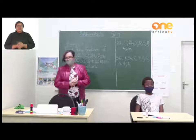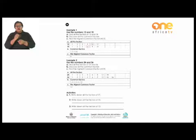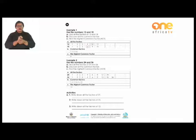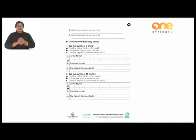We continue on page 14. After the examples you will find your activities. The first activity says: write down all the factors of 27. Number two: write down all the factors of 35. Number three: write down all the factors of 72. Number four: write down all the factors of 84. Number five: write down all the factors of 99.